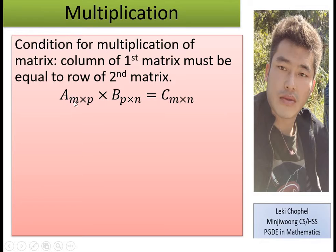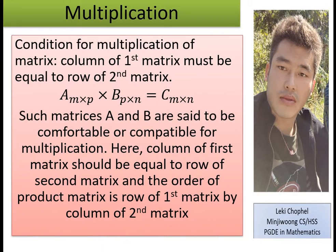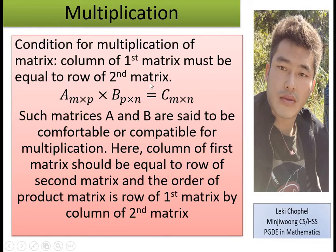M is the row of the product matrix and N is the column of the product matrix. Matrices A and B are said to be compatible for multiplication because the column of the first equals the row of the second (both P), and the product order is M×N.